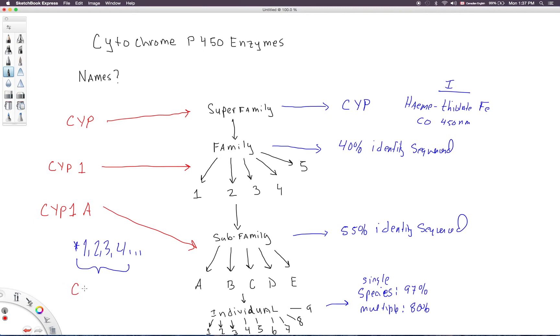And then likewise, CYP1A just means that we have this much, we've been able to get it into a subfamily. And then if we know the individual enzyme, we could look at CYP1A1, and that would take us down to the individual enzyme in a specific species. And then we might see something like CYP1A1 asterisk 1, we're talking about a specific allele of that.